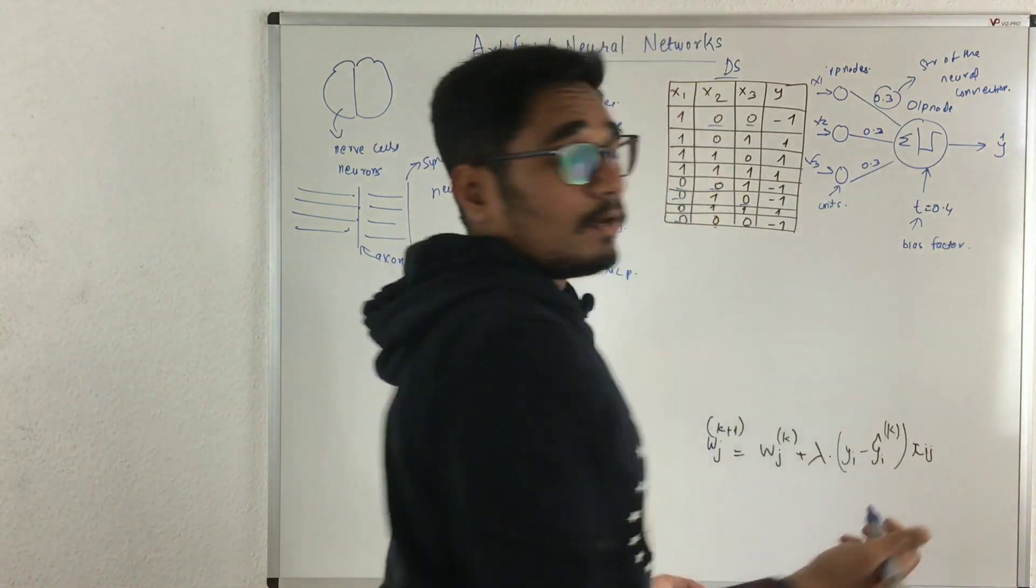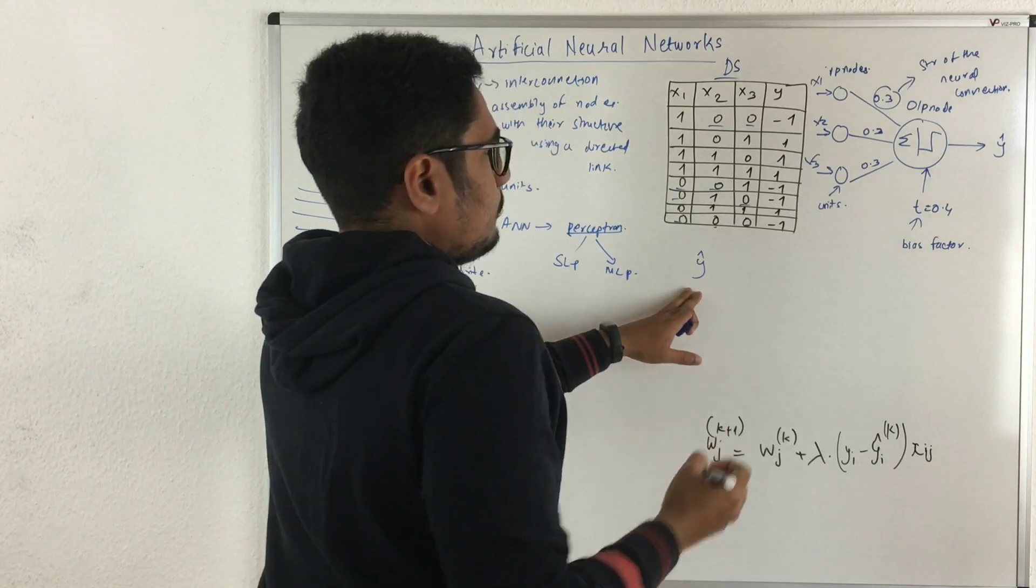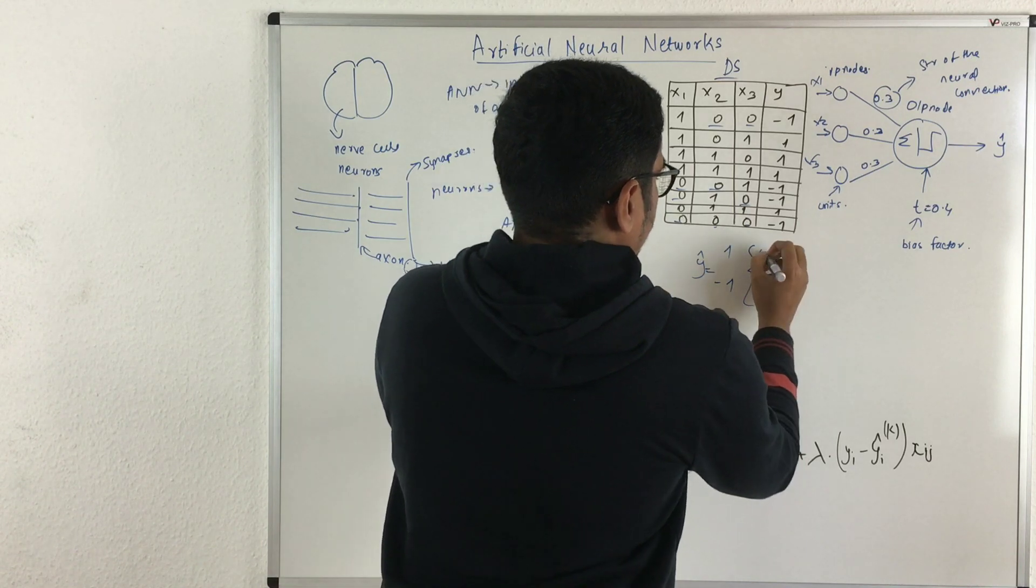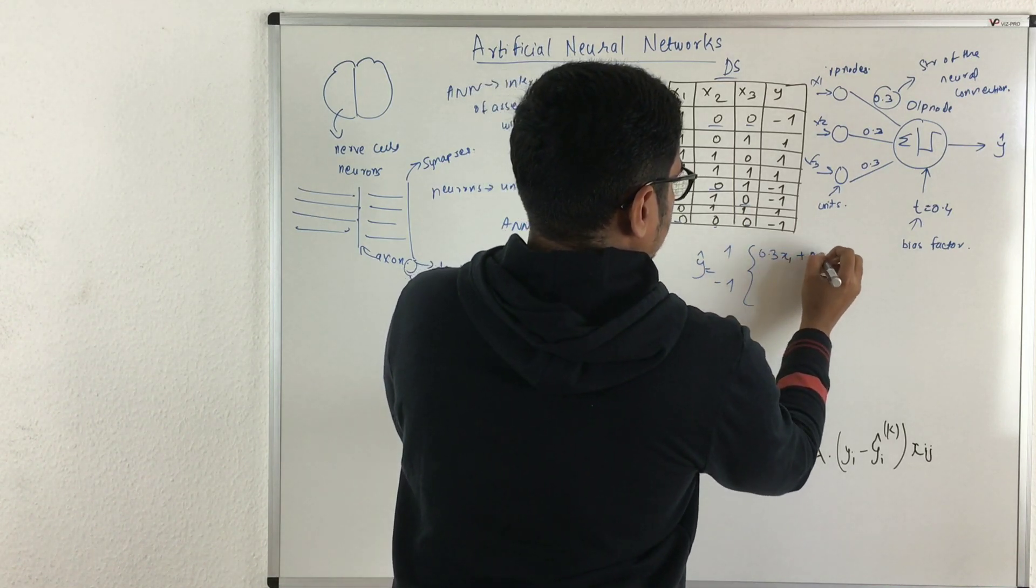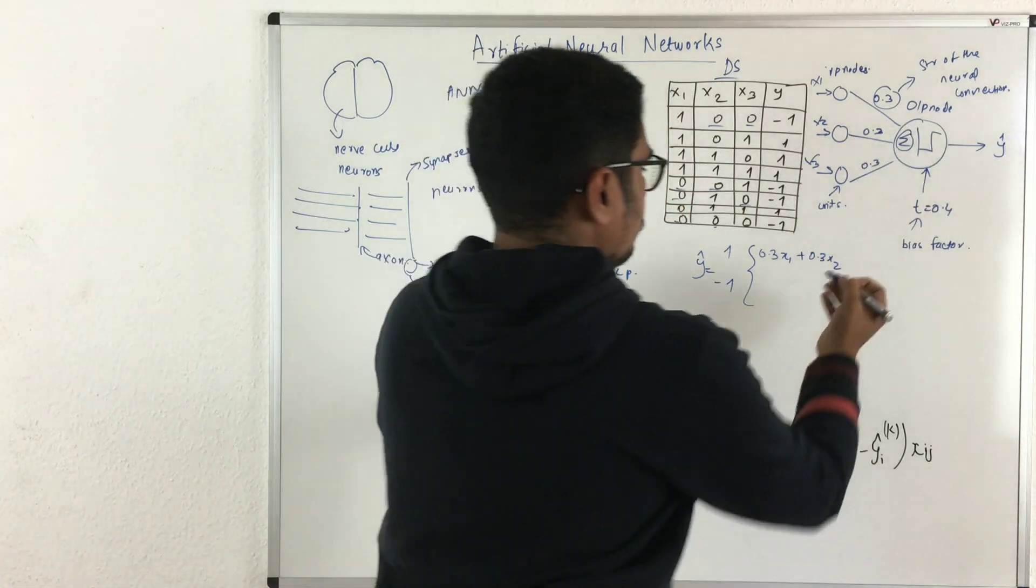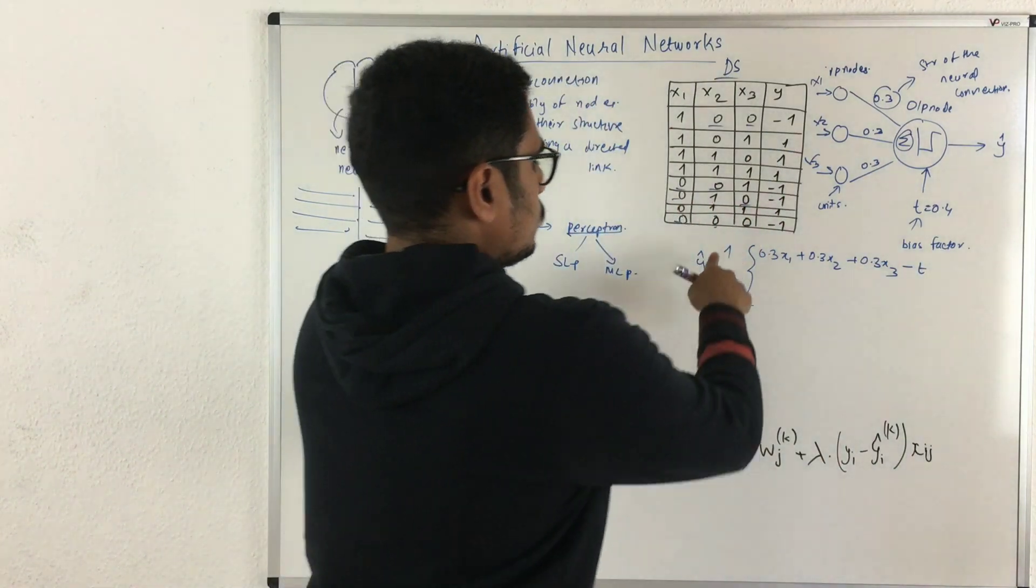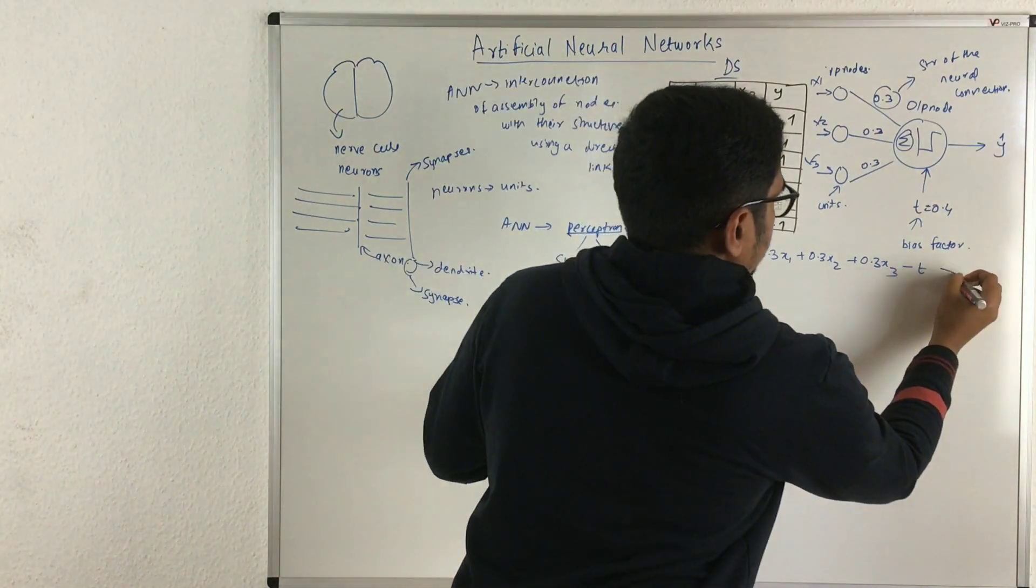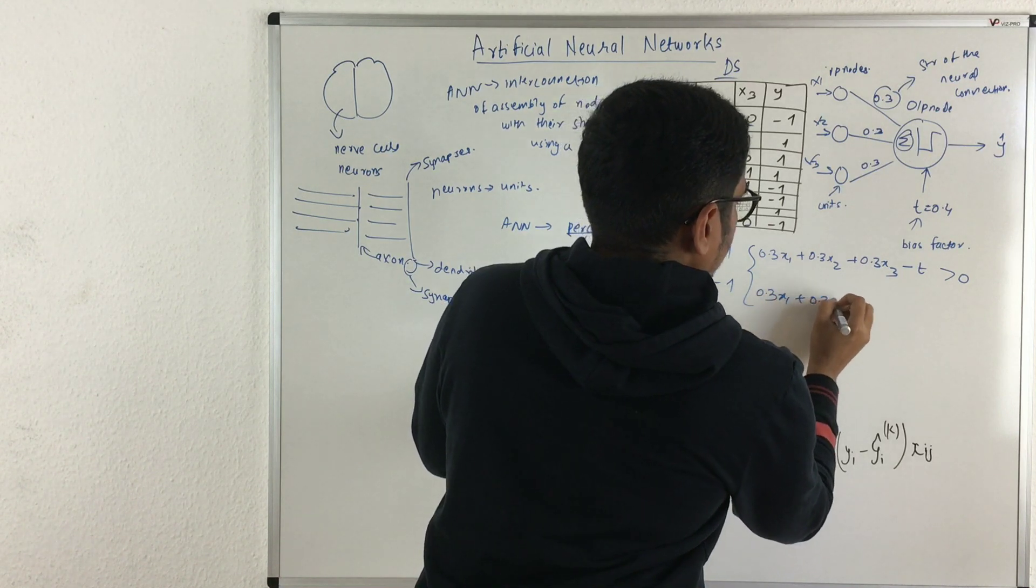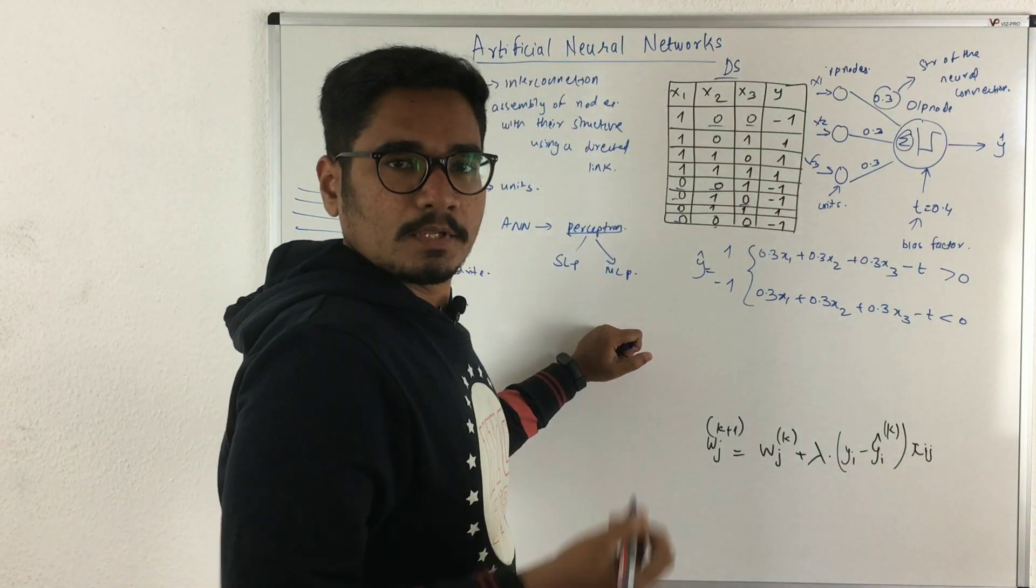Now one main question is how the output basically looks. The output is something like y cap. It takes two values, one and minus one. The function would be 0.3x1 + 0.3x2 + 0.3x3, subtracted from the bias. This value holds out to be one if it is greater than zero, and for minus one this value comes out to be less than zero.